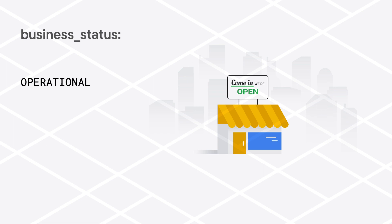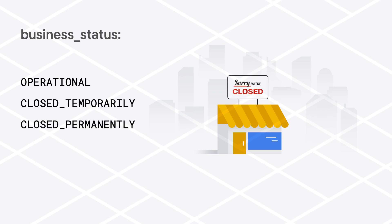To represent temporary closures in the API, we've created a new enum field called business_status. This enum has three possible values: operational, closed temporarily, and closed permanently. If we don't have information about the establishment's status, the field won't be returned in the response.